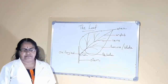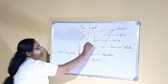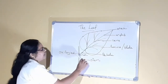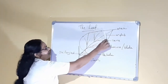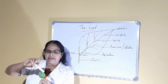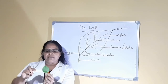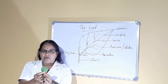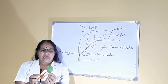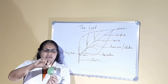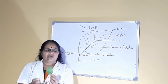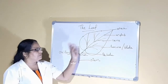The main vein is called the midrib — that is in the center. The flat part of the leaf is called the leaf lamina or the leaf blade. The entire green flat part is the leaf lamina. And the edge of the leaf is called the leaf margin — that is the boundary or edge of the leaf.